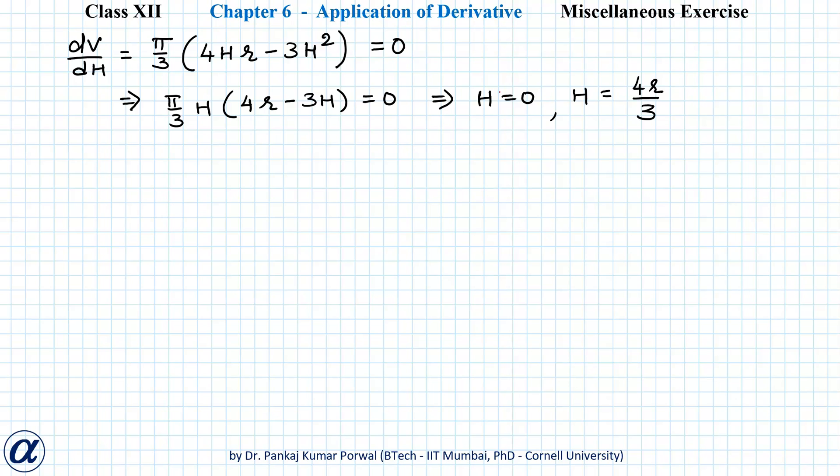Now H = 0 will give us degenerate solution so we will ignore that. So only solution that we have is H = 4r/3 and to check whether we have maximum or minimum at this value of H we do second derivative test.